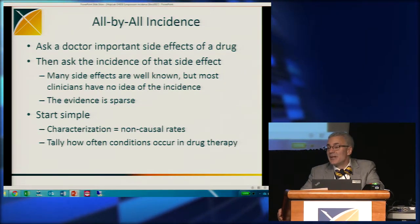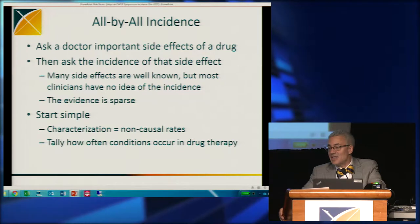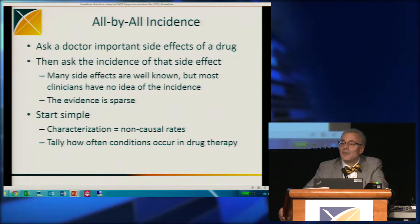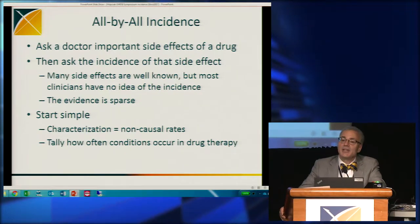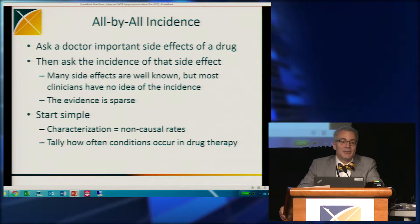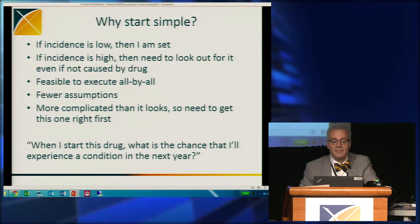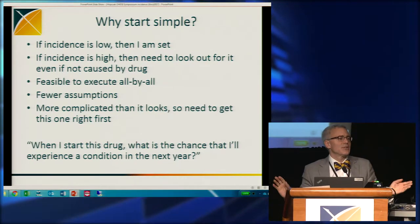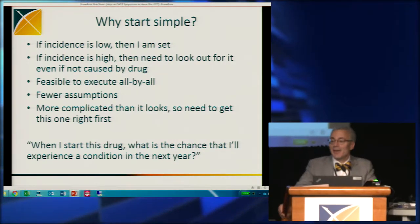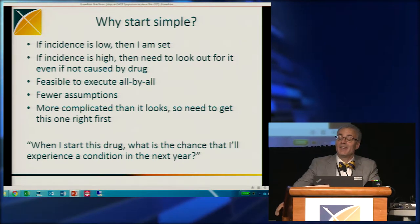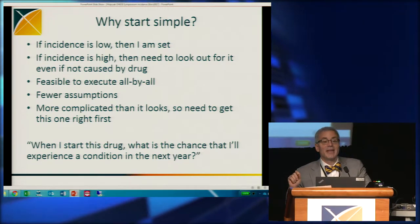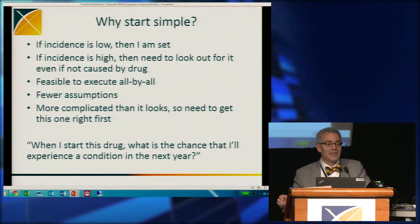So the idea is, why don't we start simple? Do clinical characterization, as OHDSI calls it, that is non-causal — just tally how often a condition occurs during a cohort. For example, how often there's a side effect after you start a drug. Why do we want to start so simple here? Well, if the incidence is low, then I don't need to worry about it. I don't have to worry about what the cause is — if it's low and I've gotten the estimate right, then I don't care if it's causal because the probability is low.